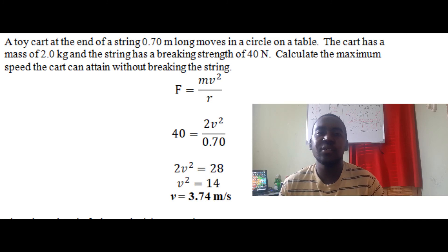The equation for centripetal force is F = mv²/r. We have F being 40, the mass is 2 kg, v is unknown, and the radius is 0.70. We cross multiply, so 40 times 0.70 equals 28.